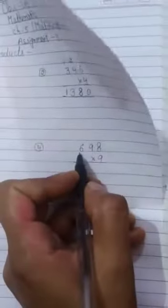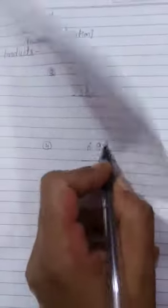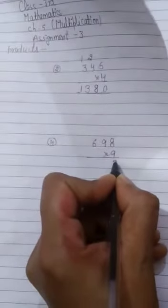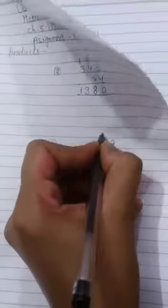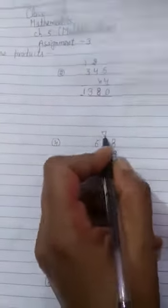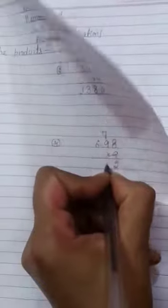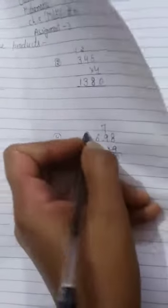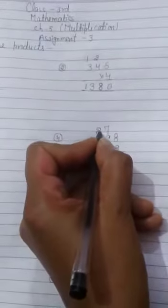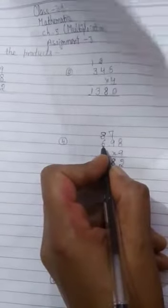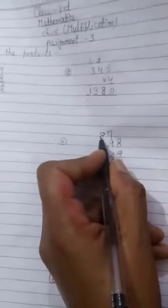Question number 4. 698 multiplied by 9. 9 times 8 is 72. We will write 2 here and 7 here. 9 times 9 is 81, 81 plus 7 is 88. We will write 8 here and 8 here. 9 times 6 is 54, 54 plus 8 is 62. Now answer is 6282.